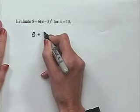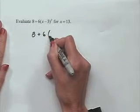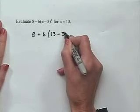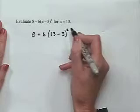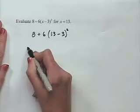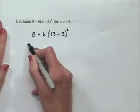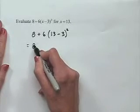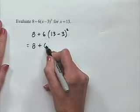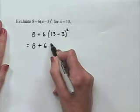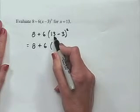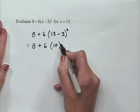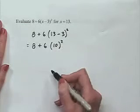We substitute to get 8 plus 6 times 13 minus 3 squared. By order of operations, we work within the parentheses first. Inside the parentheses, 13 minus 3 is 10, and then that result is squared.